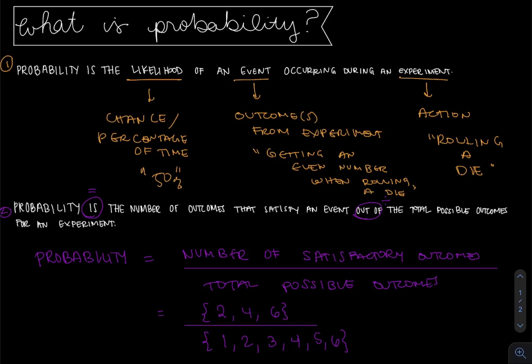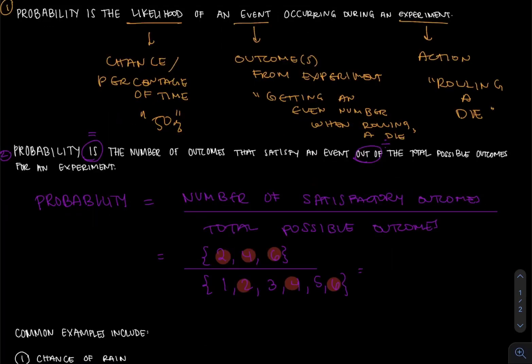Notice, I'm going to highlight this, that two, four, and six are part of the whole list of possible outcomes. So one might say the numerator is the part and the denominator is the whole. So another way people talk about probability is that probability is equal to part out of whole.